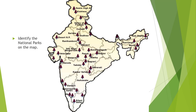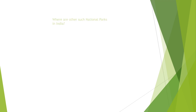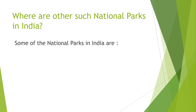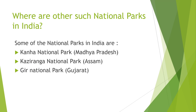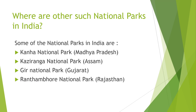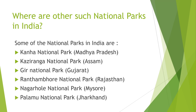If I ask where is Kaziranga, your answer should be Assam. For other national parks also, you have to find out the state where they are situated. Some of the national parks in India are: Kanha National Park in Madhya Pradesh, Kaziranga National Park in Assam, Gir National Park in Gujarat, Ranthambore National Park in Rajasthan, Nagarhole National Park in Mysore, and Palamu National Park in Jharkhand. Please remember these national parks.